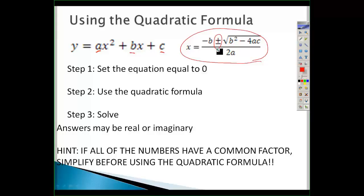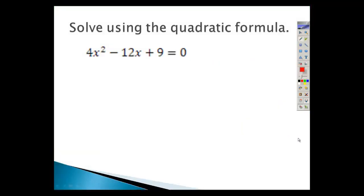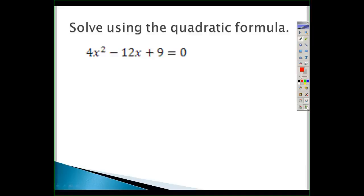To make the quadratic formula go a little smoother, if all the numbers have a common factor, simplify before using the formula. For example, if you have 3x² + 6x + 9 = 0 and they all have a 3 in common, factor that out. Divide both sides by 3 to get x² + 2x + 3, so your a, b, and c values are much smaller and easier to work with. You'll still get the same answer either way.